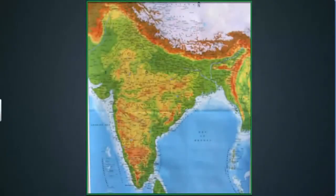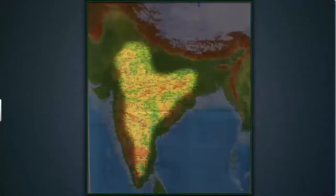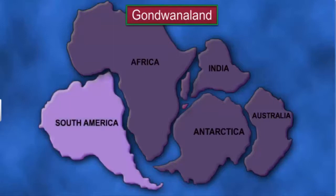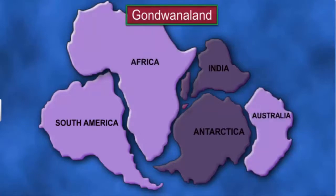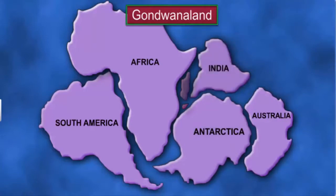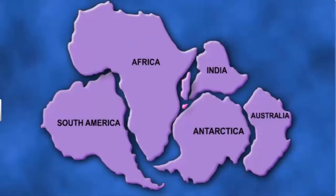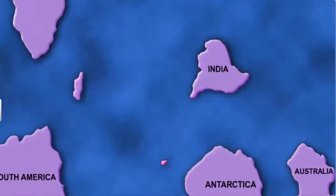How is this theory applicable to India? Peninsular India is a part of an ancient supercontinent called Gondwana Land. Gondwana Land originally consisted of a number of land masses including South America, Africa, Australia, Antarctica, and the Indian subcontinent all joined together. Convectional currents split up the crust of Gondwana Land into smaller parts, of which the Indian Plate was one.